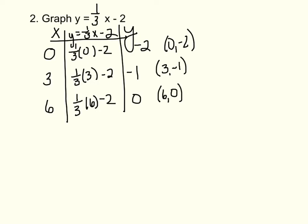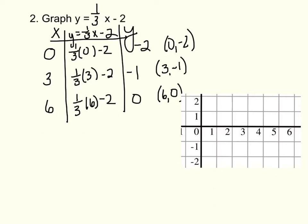Now I'm going to graph this. Make sure when you draw this in your notes, you have arrows at the end and you label your x and y axes. Graph the points (0, -2), (3, -1), and (6, 0), draw your line, and you now have a linear equation.